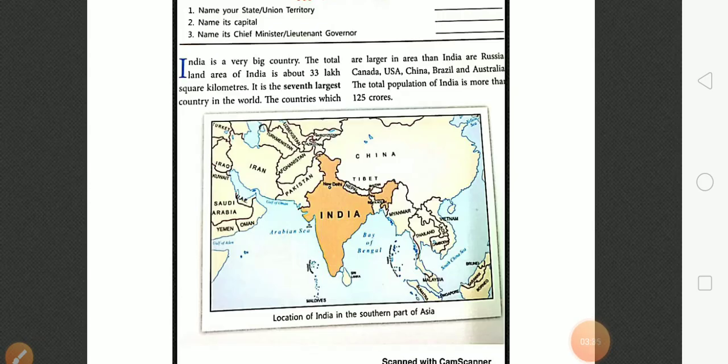The area of India is about 33 lakh square kilometers and it is the seventh largest country in the world. The countries which are larger in area than India are Russia, Canada, USA, China, Brazil, and Australia.